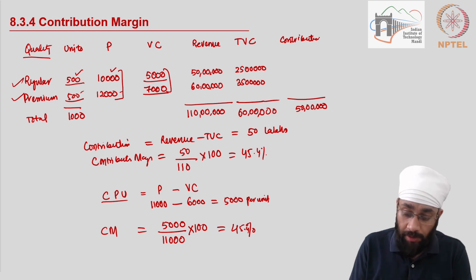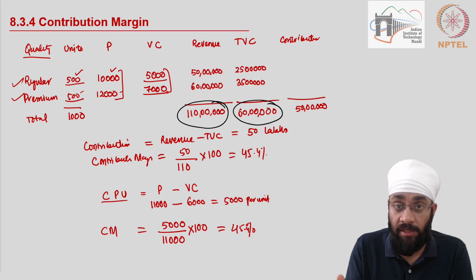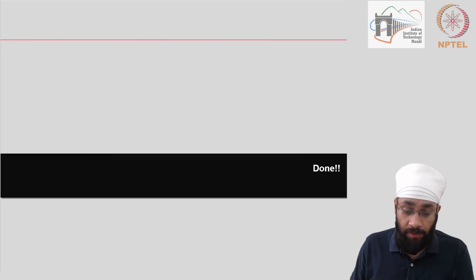So this is the contribution margin. What we are saying here is that out of the total revenue, the revenue that we generate, 60 lakhs have to be spent on basically producing the product. And then you are only left with 50 lakhs worth of rupees to cover the fixed cost. So that's how contribution margin is calculated. I'll see you in the next video.